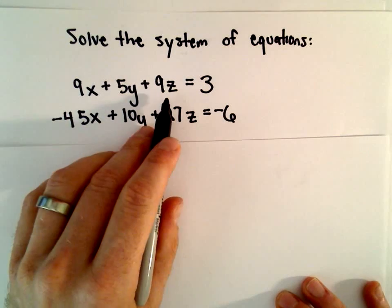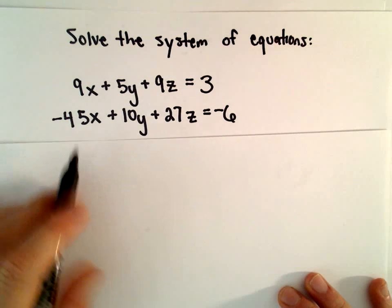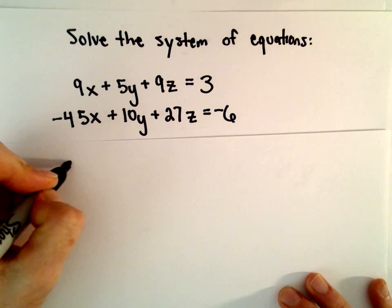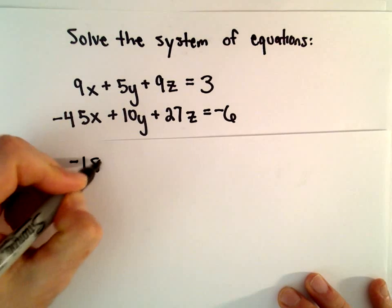To do that, I'm going to multiply both sides of my first equation by negative 2. If we take 9x and multiply by negative 2, we'll get negative 18x.